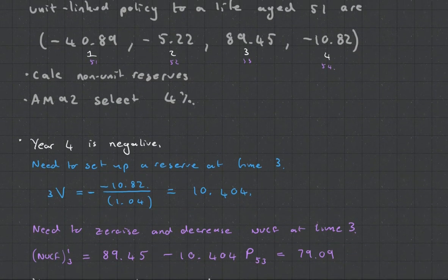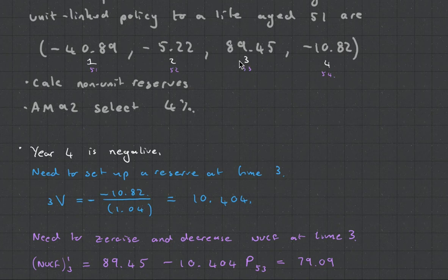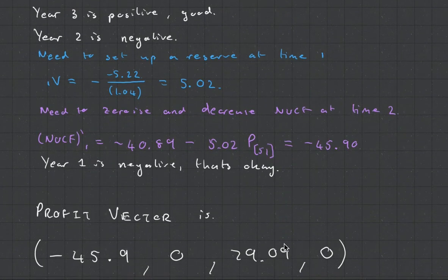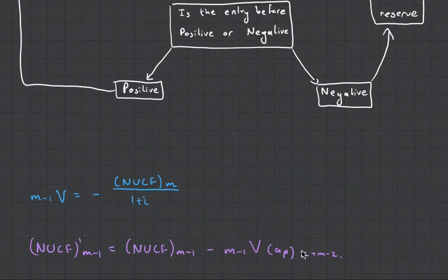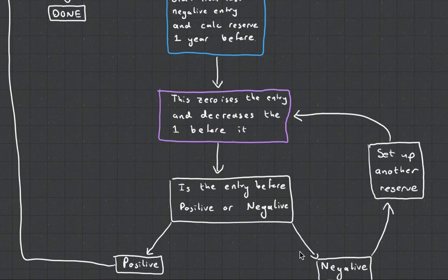If we come to our example, this is now for year 3. We take its existing value and we subtract it by the reserves, times the probability that the person is still alive, and we get 79.09, which if you see at the end, is what we've got over there. 79.09. So let's go back to our diagram.